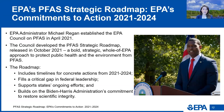In April 2021, EPA Administrator Michael Regan established the EPA Council on PFAS and charged it to develop a bold, strategic, whole-of-EPA approach to protect public health and the environment from the impacts of PFAS. The Council, comprised of senior technical and policy leaders from across EPA program offices and regional offices, is co-chaired by EPA's Assistant Administrator for Water, Radhika Fox, and EPA's Regional Administrator for Region 1, David Cash. The Council met Administrator Regan's call through the PFAS Strategic Roadmap, released in October 2021.